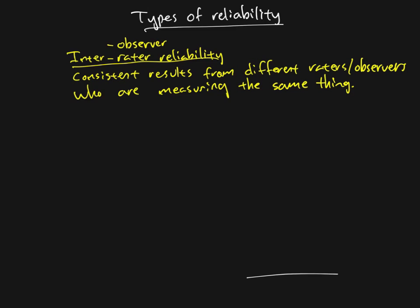The last major type of reliability is called internal consistency, which is quite different from the other forms. Scientific terminology isn't always descriptive, but with reliability, the terms are nicely informative. Internal consistency is internal because we're taking just one of our measures and looking at how consistent the different parts of that measure are with each other. This is usually done with questionnaires or tests that have multiple parts all trying to measure the same general thing.